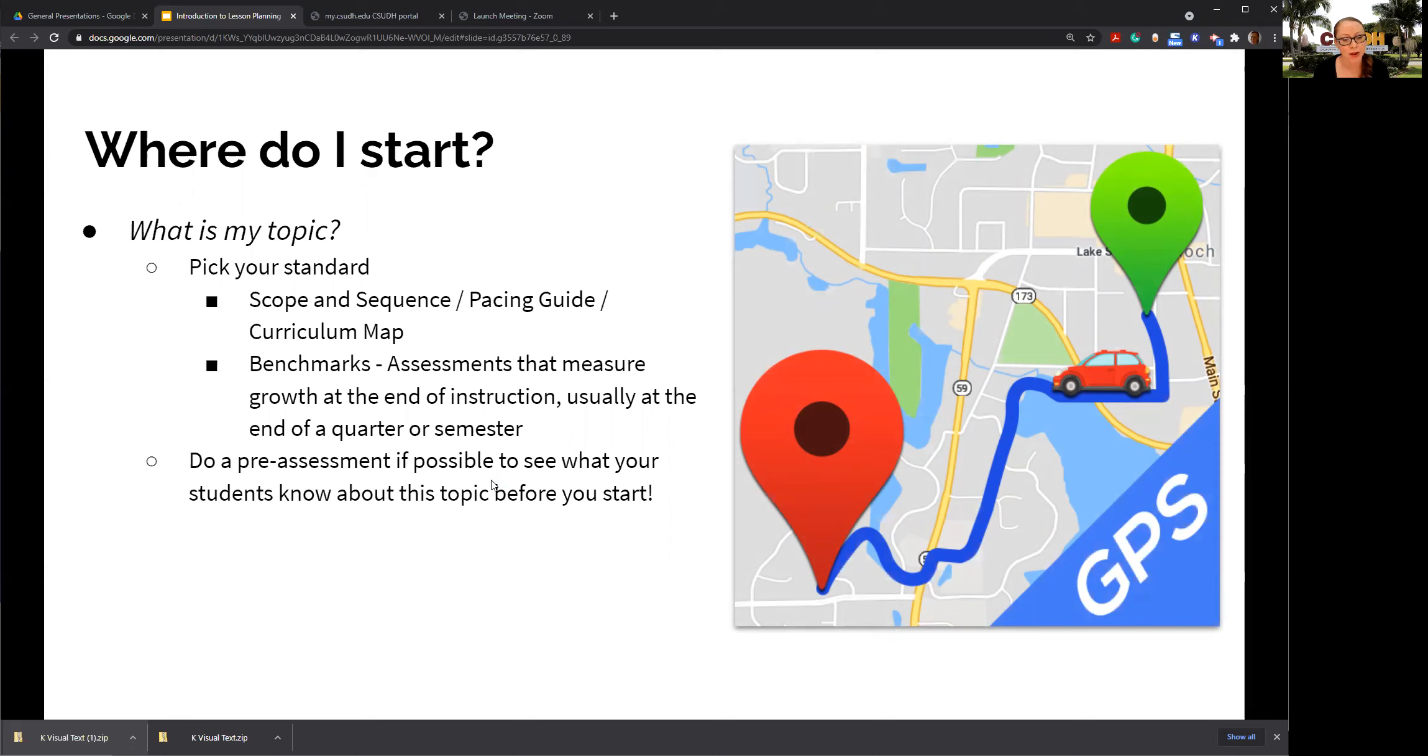You do have to follow a scope and sequence, or it might be called a pacing guide or curriculum map. This is basically a plan set out on somewhat of a calendar for you by your school district or your school. This tells you how long you're supposed to spend on each topic and each set of standards, how deep you should go on each one. That's a very helpful tool once you learn how to use it.